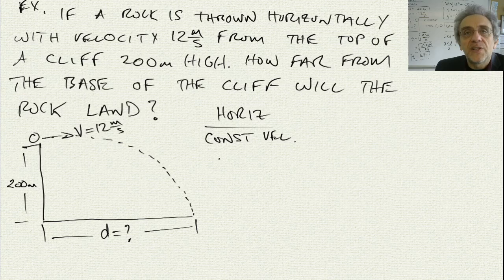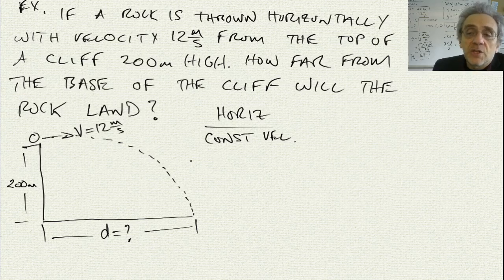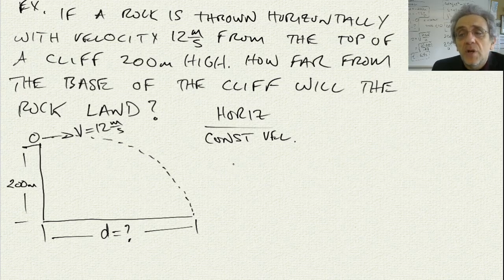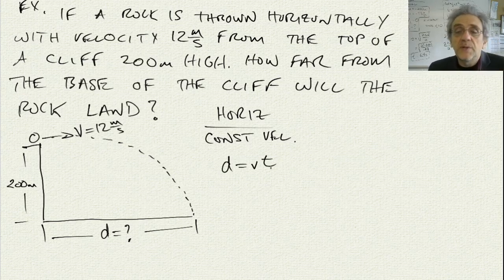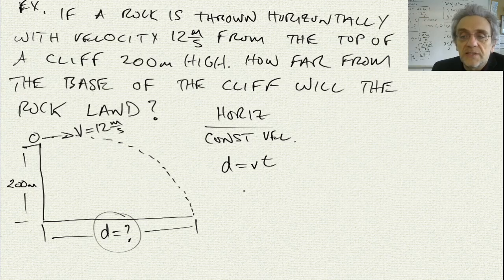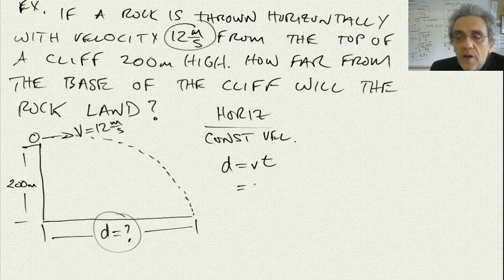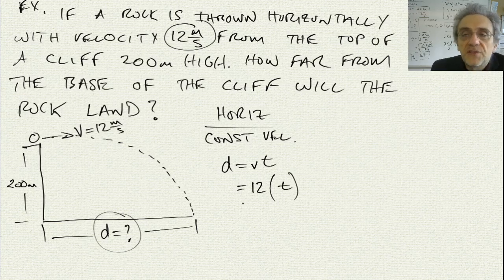We do not have acceleration in the horizontal direction, only constant velocity. That makes this extremely simple, because there is only one equation that describes constant velocity, and that is d = vt. That's the horizontal distance we're trying to solve for. All we need to do is multiply the horizontal velocity — which was given as 12 meters per second — by the time. But we're stuck, because nowhere in the question does it give us the time.